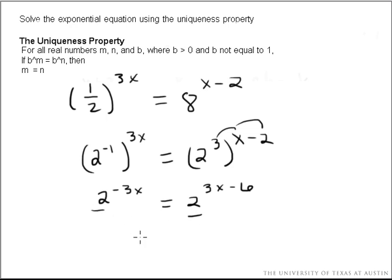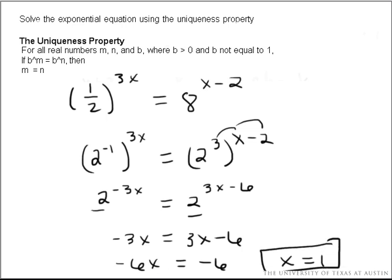Now my bases are the same, so I set my exponents equal. Negative 3x equals 3x minus 6. If I attempt to solve for x now, I get negative 6x equals negative 6. Divide both sides by negative 6, and get x equals 1. And that is my final answer.